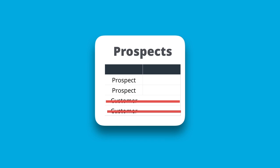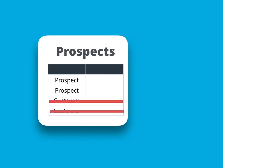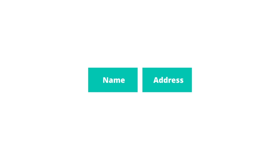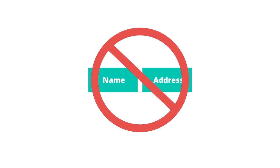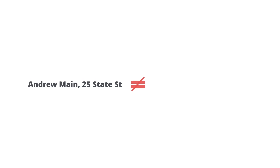However, given that there probably isn't a nice ID code to match on between these two files, we need to find a way to join the data sets on other fields. We can use the name and address fields, but what we find in practice is that we don't get good matches between names and addresses representing the same people because they're frequently spelled slightly differently. An Andrew Main at 25 State St. for street is not going to join with Andy Main at 25 State St. spelled out in full.